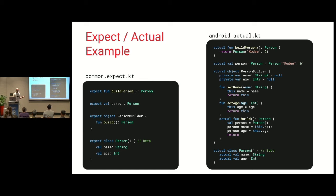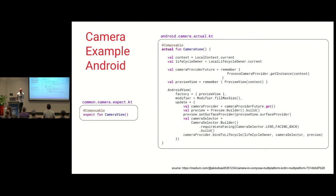Expect and Actual support a lot of types — you can expect a function, a variable or value, or an object. Here is the camera example. In the common module, you just declare a composable with the expect keyword — a camera view. You don't have to worry about how it's implemented at this stage. You just build your screen and put the camera view inside. Then on Android, for instance, you will have the actual implementation.